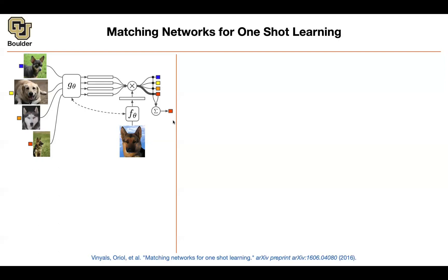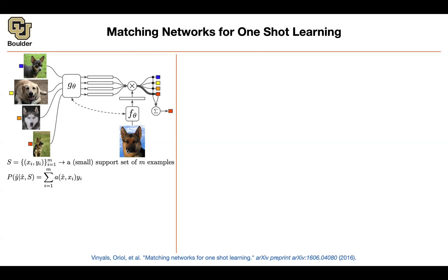So what do you have at test time? You have a support set — exactly this support set of new classes and new examples. The y's are the classes: red, orange, yellow, blue. Per each one, you have a handful of images, perhaps even just one. These are the x's with known corresponding labels — a small support set of m examples in total. You have a new image x̂, and the label you predict for it is a weighted combination of the labels for the images in your support set, driven by some attention.